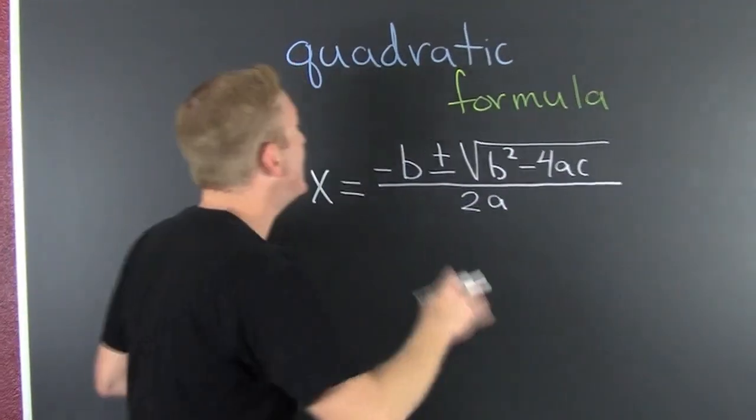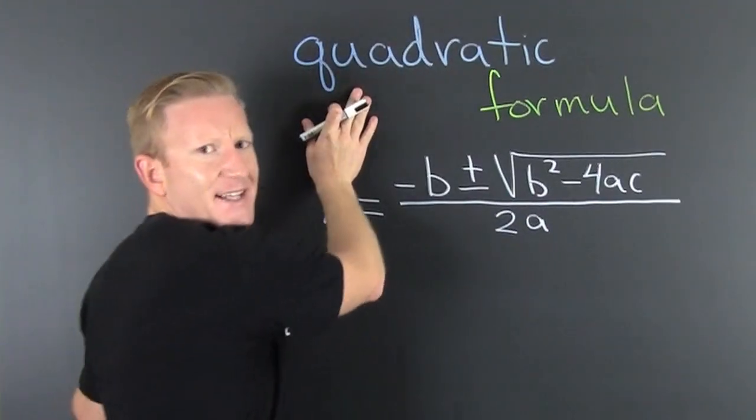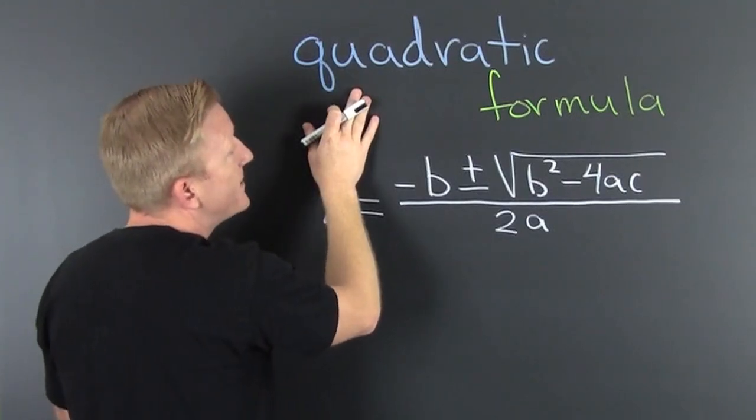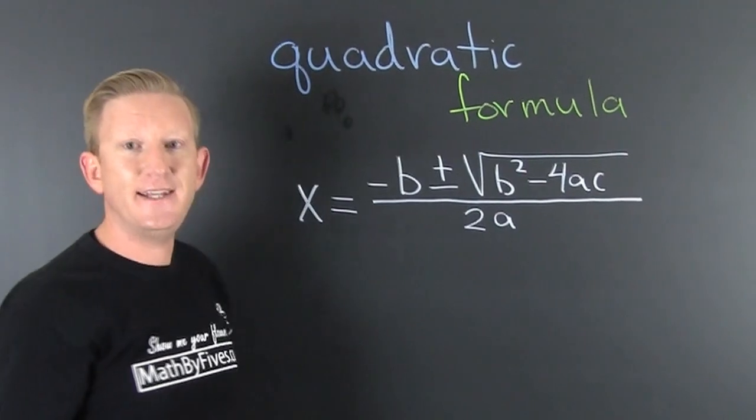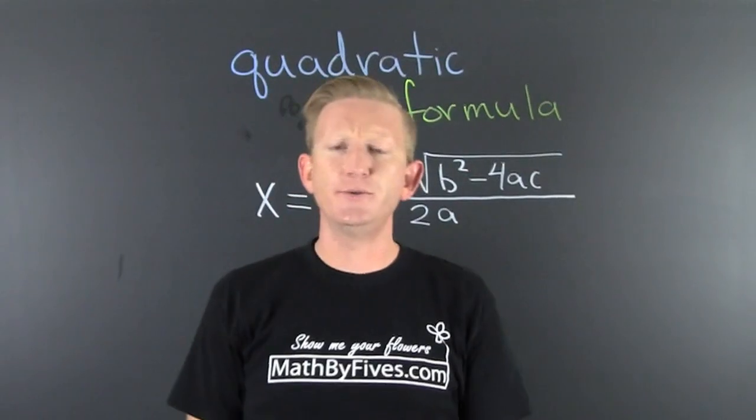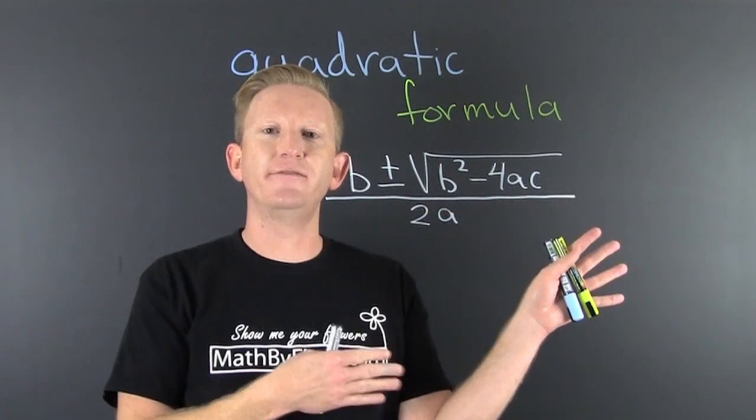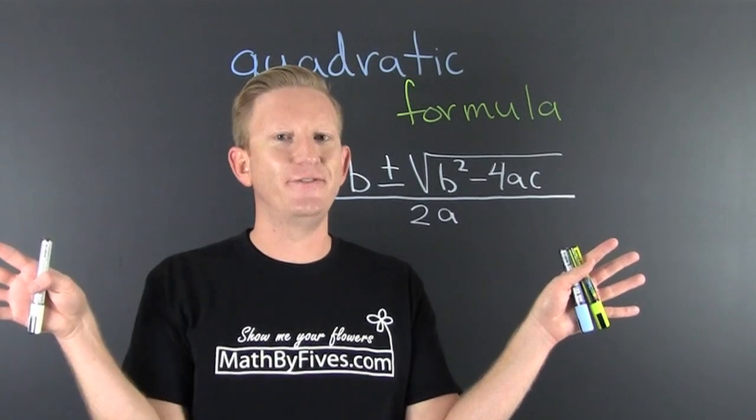It's the quadratic formula. It's famous. Is that spelled right? Yeah. It's famous. So famous, it has a theme song. It goes to Pop Goes the Weasel. Now I have some other variations on this, so wait for that if you've heard this.